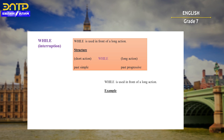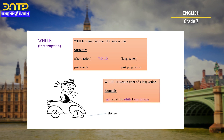'While' is also used when a short action interrupts a long action. The structure is: short action in past simple + while + long action in past progressive. For example: 'I got a flat tire while I was driving.' 'I got a flat tire' is a short action in past simple, and 'I was driving' is a long action in past progressive.